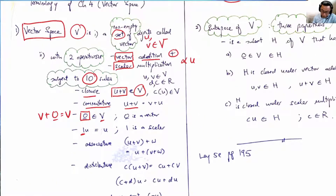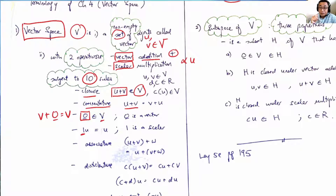In closure, remember that a vector space is a non-empty set of vectors supported by two operations subjected to 10 rules.